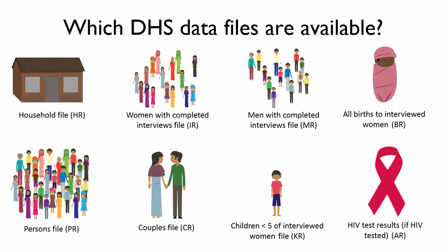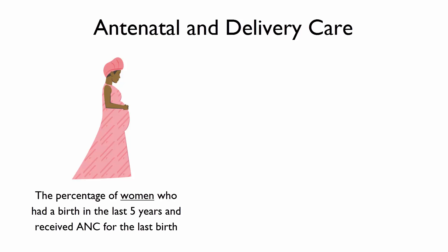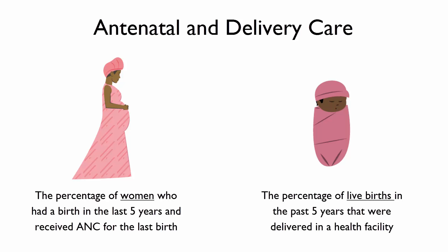One quick way to check whether you are using the correct data file is to check your unit of analysis or denominator — does it match the unit of analysis or denominator found in the final report? For example, let's look at antenatal and delivery care. Some tables are based on women, such as the percentage of women who had a birth in the last 5 years and received ANC for the last birth. Others are based on births or children, such as the percentage of live births in the past 5 years that were delivered in a health facility.